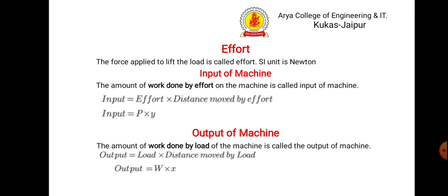P is the effort and Y is the distance moved by the effort. Similarly, the output of the machine is the work done by the load, which is load multiplied by the distance moved by the load. Load is represented by W and X is the distance moved by the load. So input is P × Y and output is W × X.